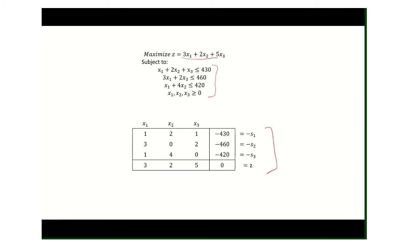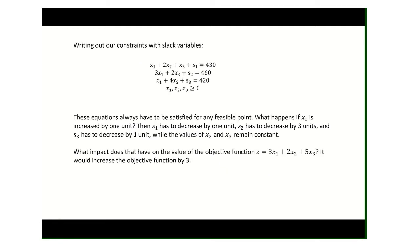We can solve this out using the simplex method, or we can solve it out using Excel, and we're going to solve that using Excel in a minute. But we're going to look at some of the implications of this. When we write this program out with slack variables, here's what we get from our initial program. We've just added in the slack variables S1, S2, and S3. We get equalities.